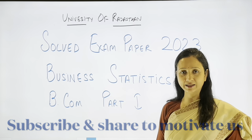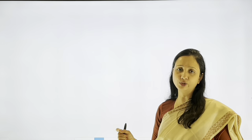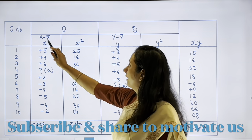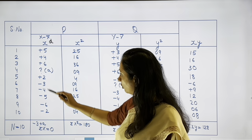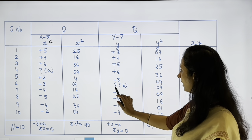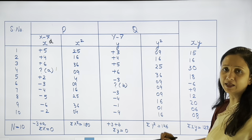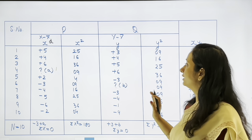Unit 4's first practical question is on correlation. Two series P and Q are given with deviations from their actual means. Two values are missing: the missing value in P series is assumed as A, and in Q series as B. The total of deviations from the mean (Σd) equals zero, so from P series: −3 + A = 0, giving A = 3.